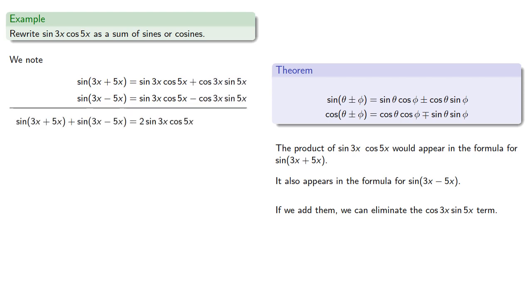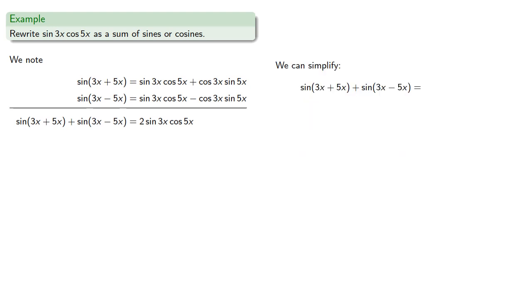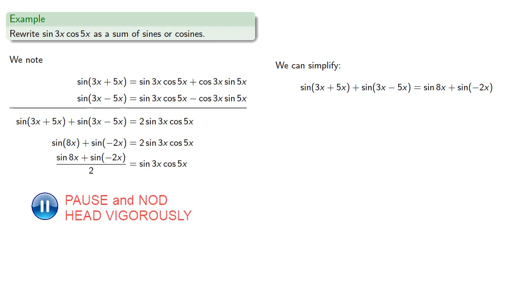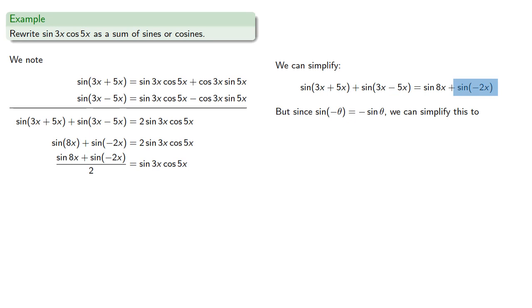And we can simplify the arguments. And we can solve for sin 3x cos 5x. And we can make one more simplification. Since sine of negative theta is negative sine of theta, we can simplify this sin(-2x) as minus sin 2x. And so we can write our final answer.